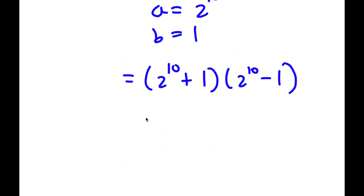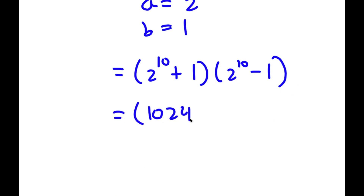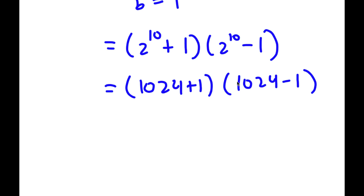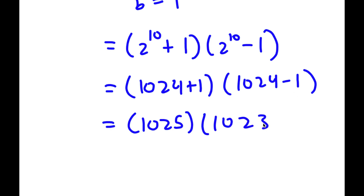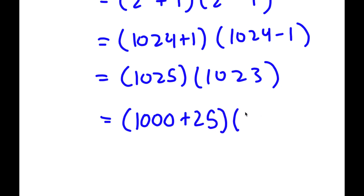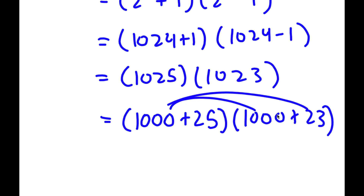And 2 to the power of 10 is 1,024. So now I have 1,024 plus 1 times 1,024 minus 1. Now 1,024 plus 1 equals 1,025, and 1,024 minus 1 is 1,023. So I have 1,025 times 1,023. An easier way to solve this instead of just multiplying these two is I'm going to rewrite these with 1,000s. So 1,025 is 1,000 plus 25, and 1,023 is 1,000 plus 23. This makes it a lot easier to find the product because we can simply distribute.